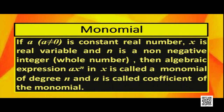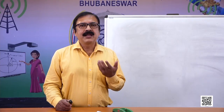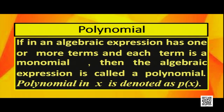If a, where a is not equal to 0, is a constant real number, x is a real variable, and n is a non-negative integer or whole number, then the algebraic expression ax to the power n is called a monomial of degree n. Here a is called the coefficient of the monomial. A polynomial is an algebraic expression where we may have one or more terms and each term is a monomial. Then the algebraic expression is called a polynomial.